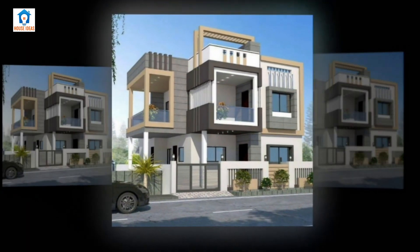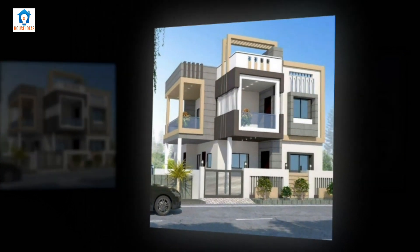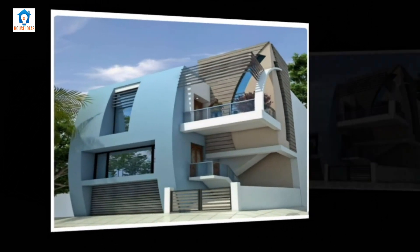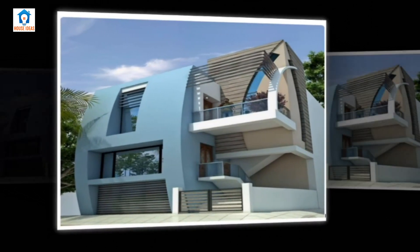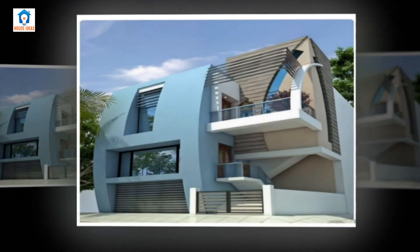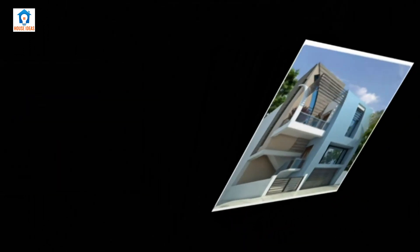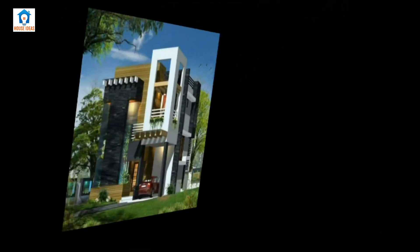Orthographic projection is a technique for drawing a three-dimensional object in two dimensions by projecting its surface into a two-dimensional representation where the projection lines are orthogonal to the projection plane. In the construction industry, the term elevation refers to an orthographic projection of the exterior faces of a building.